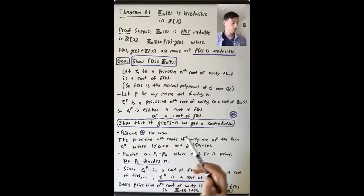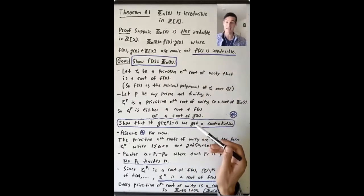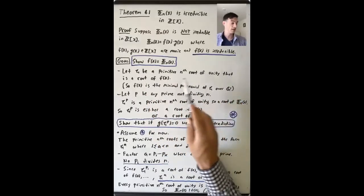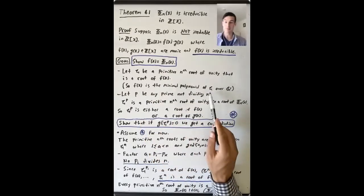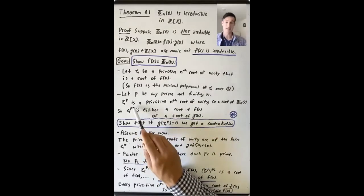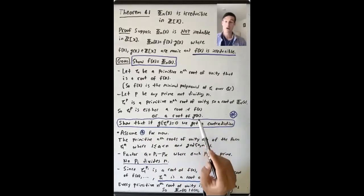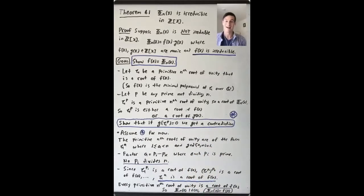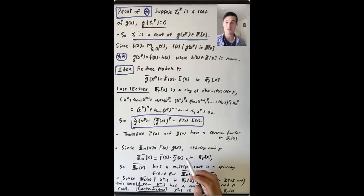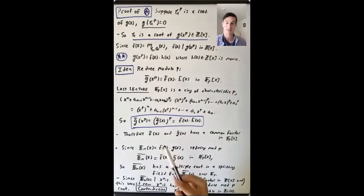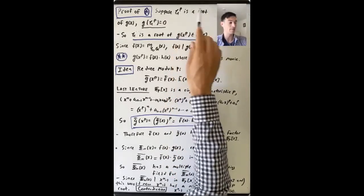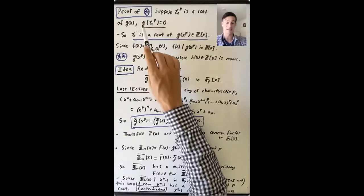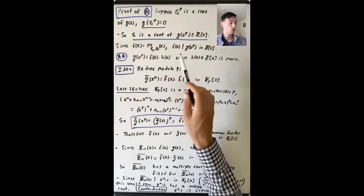So what do we have left to do? We're going to go back to this big step: we have one primitive n-th root of unity that is a root of f(x). Let's take p to be any prime not dividing n. We know zeta to the p is either a root of f or a root of g. We're going to suppose it's a root of g and derive a contradiction. Let's finish the proof that the n-th cyclotomic polynomial is irreducible by proving claim star. We're going to suppose that zeta to the p is a root of g(x), that is, g(zeta^p) equals zero.